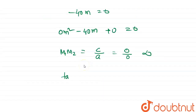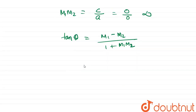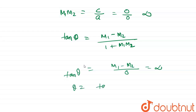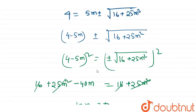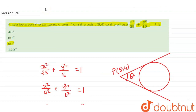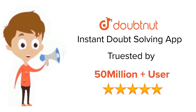Since tan θ = (m₁ − m₂) / (1 + m₁m₂), and m₁m₂ is infinite, the denominator becomes 0, making tan θ infinite. Therefore θ = tan⁻¹(∞) = 90°. So the third option is correct. Thank you. For class 6 to 12, IIT JEE and NEET level — trusted by more than 5 crore students — download DoubtNet today.